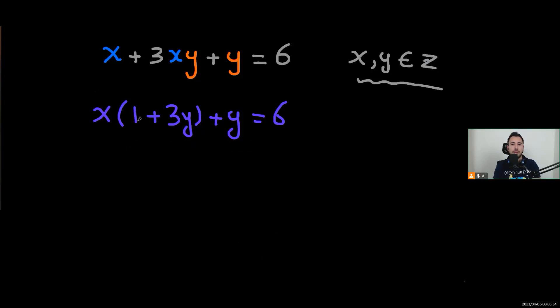So let's multiply everything, every term by 3. So we'll have 3x times 1 plus 3y plus 3y equals 18. Is that right? Okay, good.